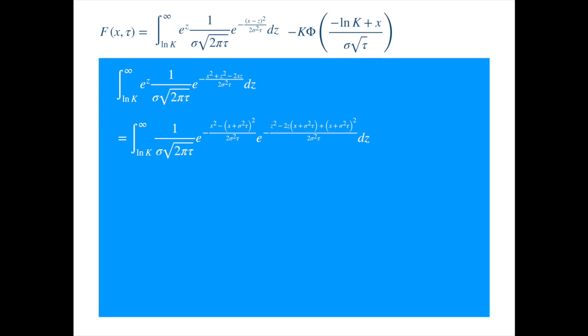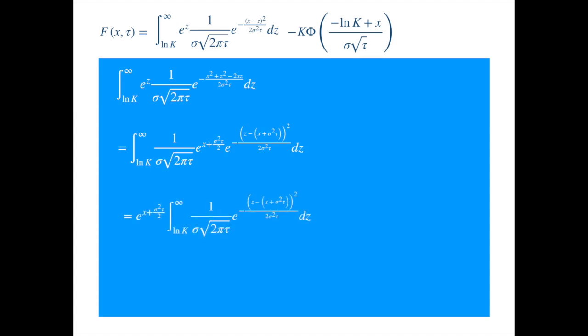Then, we expand the square in the first exponential and do the opposite in the second exponential to get a complete square, so we get... We simplify the terms in the first exponential to get... As the terms in the first exponentials don't depend on the integrating variable, we can take the first exponential out of the integral to get...